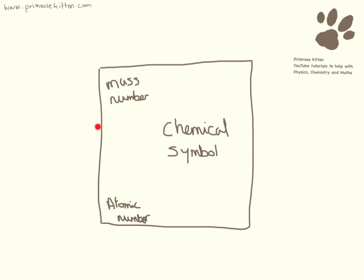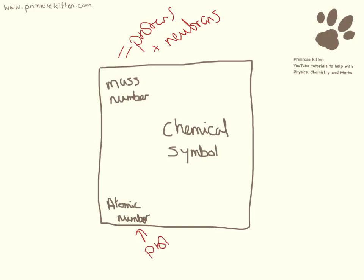In each box of the periodic table, you're going to have some information: the chemical symbol, the atomic number, and the mass number. The mass number is equal to protons plus the neutrons — these are the bits that are in the nucleus of an atom. And the atomic number is equal to the protons.